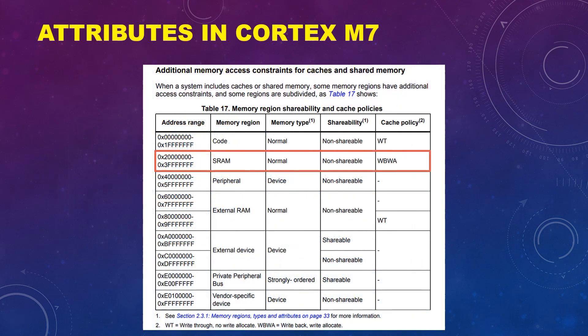Here are the cache policies for the memory locations. Remember that every cacheable region is read allocate by default. Out of these locations, we are most interested in the SRAM region. This is where data coherency issues — where the CPU and DMA are not coherent in a cacheable region — take place, specifically in write-back policy regions like SRAM.